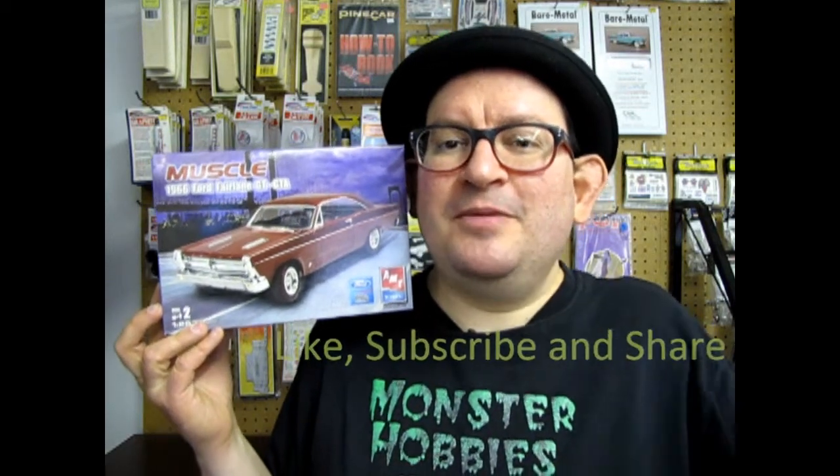Hello once again model car builders and welcome back to another exciting episode of Monster Hobbies What's in the Box where today we are going to be looking at the 1966 Ford Fairlane GT or the GTA automatic. Before we begin this video don't forget to like subscribe and share with all your friends and family. Pound that notification bell so that every time I make a new video you are the first to know about it. Let's get this thing up to 100 likes and now let's go down to our Ford showroom and see what's in the box.